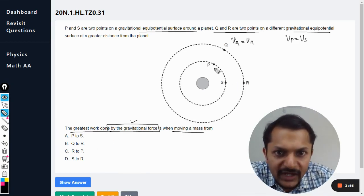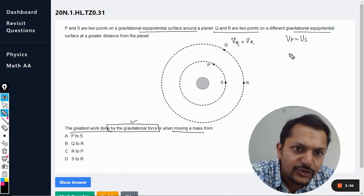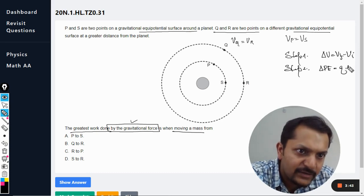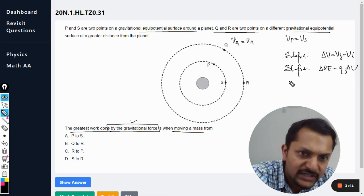I told you, step one: you find delta V, V final minus V initial. Step two: find the change in the potential energy, and how is it? Find Q into delta V. Step three: the work done is equal to negative of the potential energy.